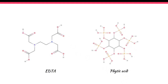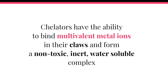EDTA and phytic acid are the most common chelators in cosmetic care at the moment, and you have certainly heard of them or even worked with them. EDTA has up to four claws depending on the salt that is used, and phytic acid has six pairs of claws — these are the OH groups you can see here.